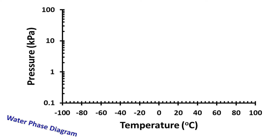The phase diagram of water is a graphical representation of the physical state of water under different conditions of temperature and pressure. A typical phase diagram has pressure on the y-axis and temperature on the x-axis.